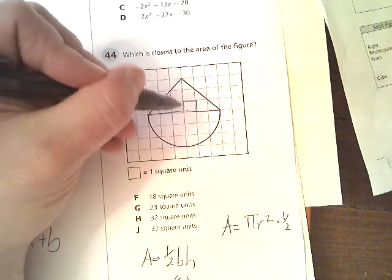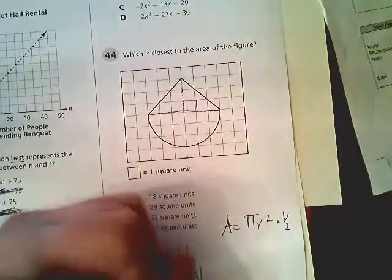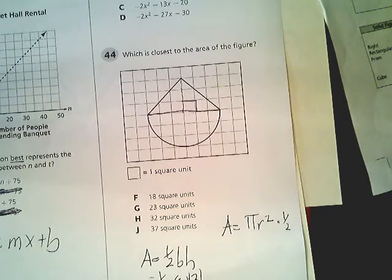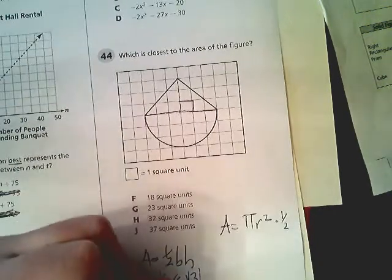So 1, 2, 3, 4, 5, 6, and 1, 2, 3. So half of this, this part will give you 9.